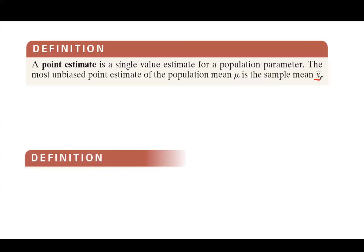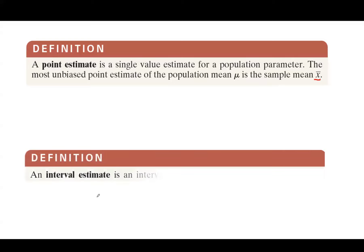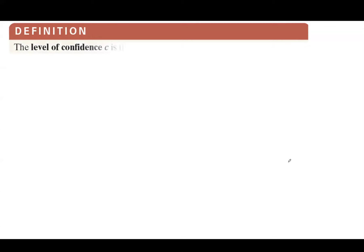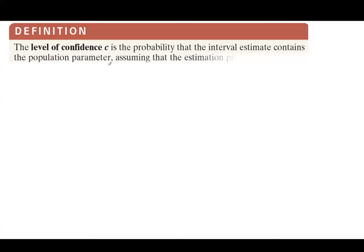The next definition is an interval estimate. An interval estimate is an interval or range of values that we use to estimate a population parameter — in this case, the population mean. We need one more definition before we jump into calculation. The level of confidence, denoted by c, is the probability that the interval estimate contains the population parameter, assuming that the estimation process is repeated a large number of times.